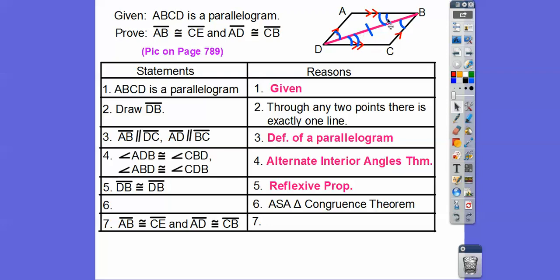Can you see these two angles and the included side are congruent to these two angles and the included side? Angle, side, angle. So triangle ABD is congruent to triangle CDB by ASA. A corresponds with C — going from A through the marked angles to D corresponds with going from C through the marked angles to B. Then by CPCTC — corresponding parts of congruent triangles are congruent — we conclude the opposite sides are congruent.